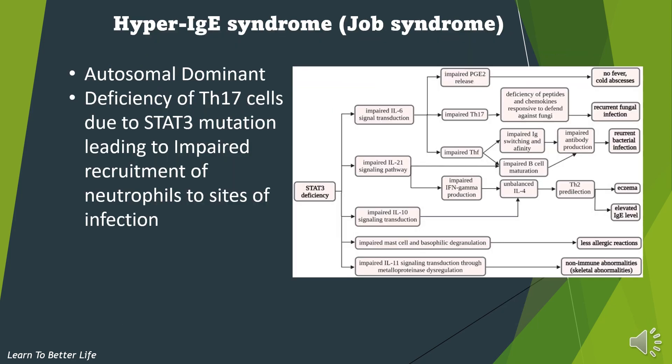Hyper-IgE syndrome, also known as Job's syndrome, is an autosomal dominant disorder that has a deficiency of Th17 cells due to a STAT3 mutation, leading to impaired recruitment of neutrophils to sites of infection.